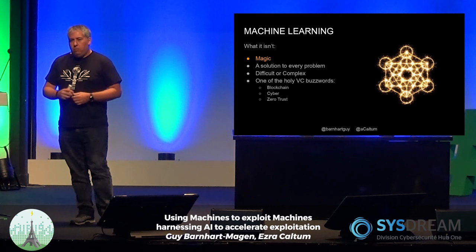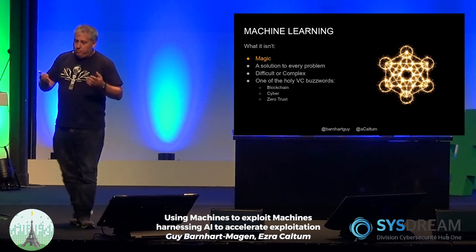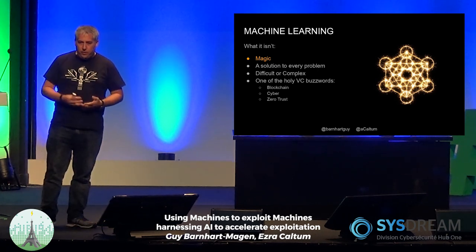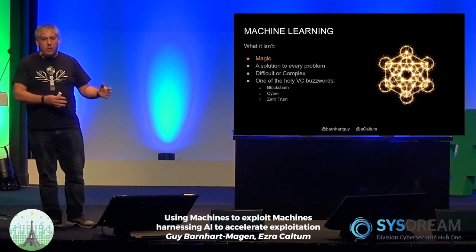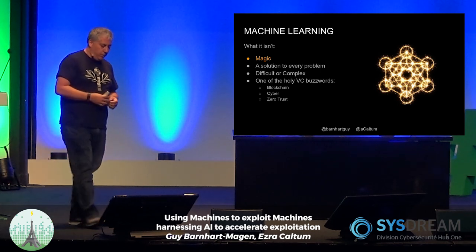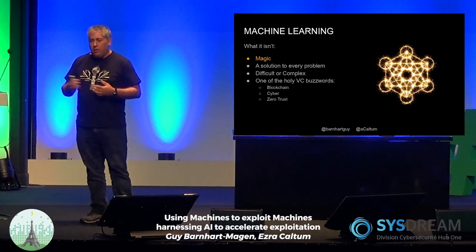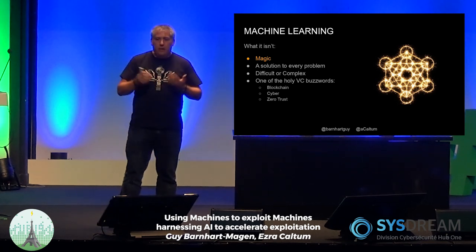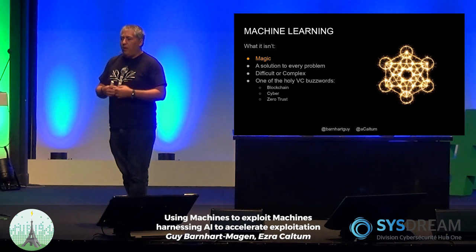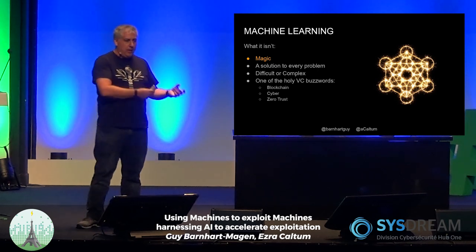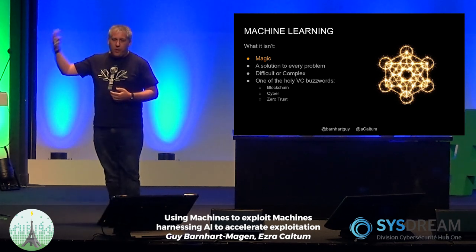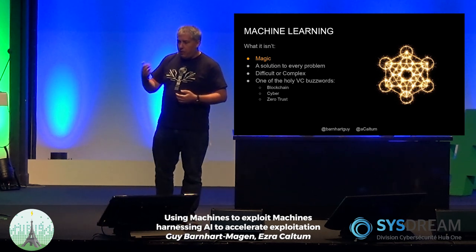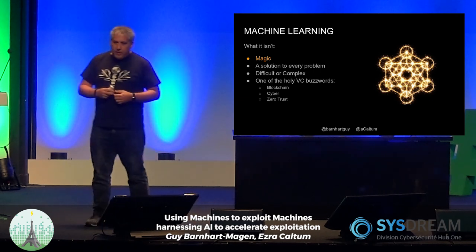Let's start with what machine learning isn't. First, it's not magic — it's basic algorithmic stuff known since the 60s or 70s. There's nothing new in machine learning for the past 30 to 40 years. The only thing that is new is that now we have more CPUs, so it's scalable. If you've studied linear regression in college, you now understand 90% of what machine learning is. It's not really difficult or complex if you're using what already exists — it's just like using a framework.